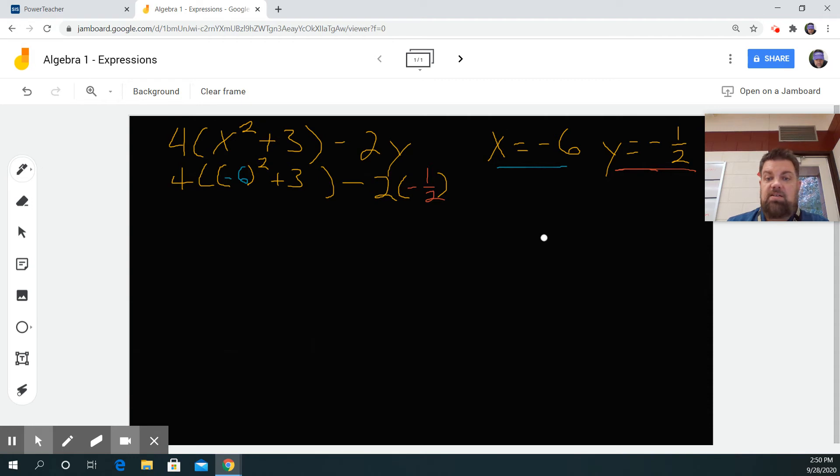So negative 6 squared is the same as negative 6 times negative 6. Remember, a negative times a negative is a positive, so that's a positive 36.